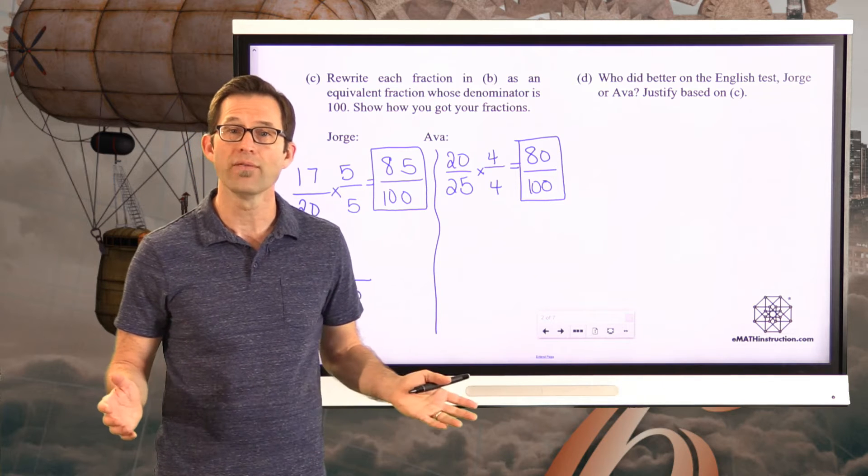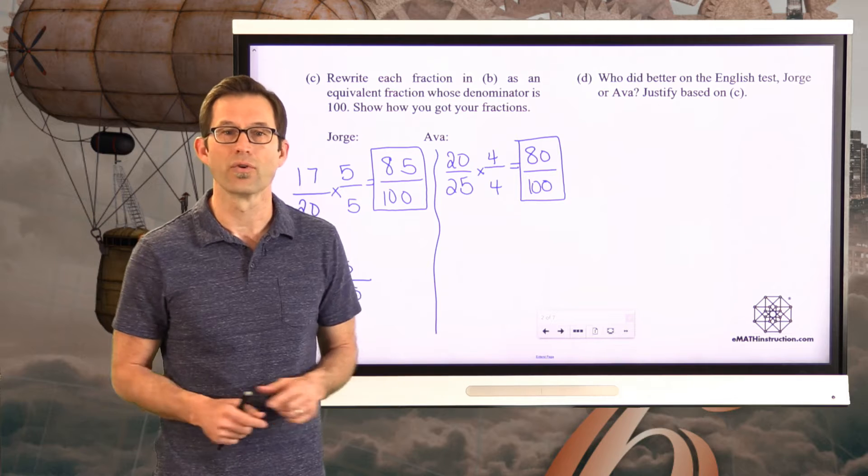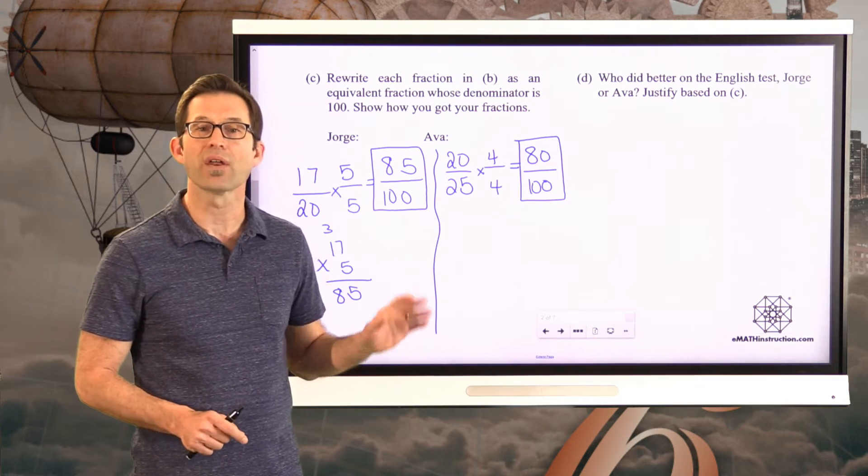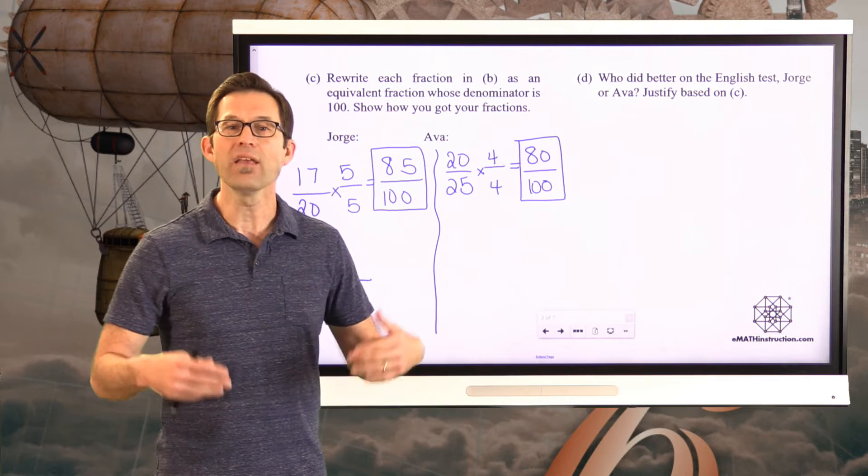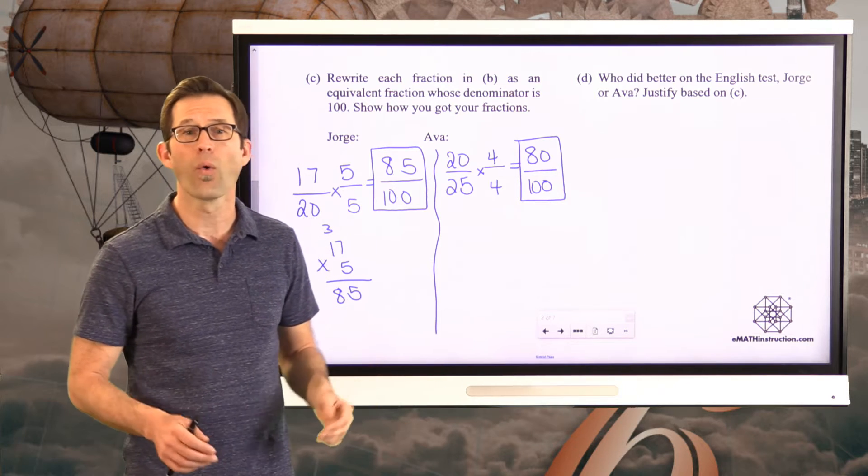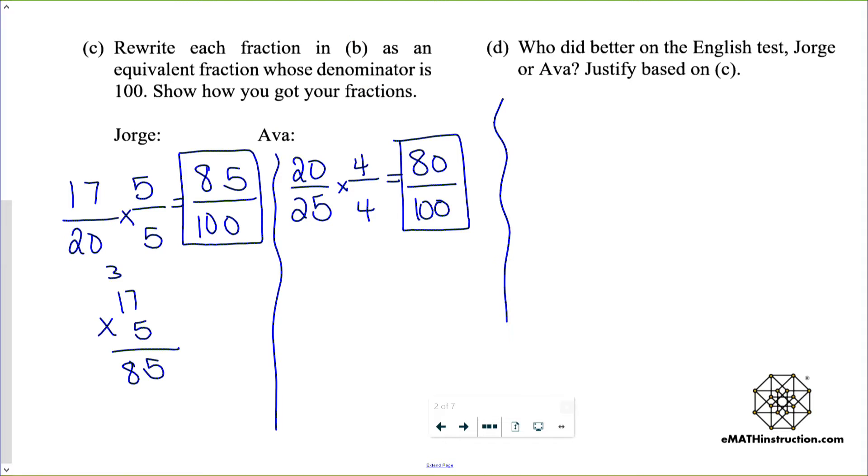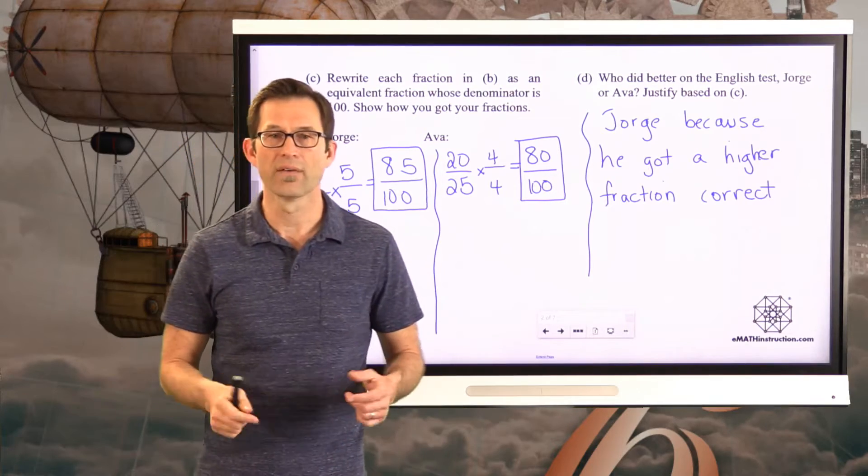So letter D, who did better on the English test, Jorge or Ava? Justify based on C. Well, we can now say that Jorge did better. Now, why did he do better? Neither one of them took a test out of 100 points. But it's very easy to now see that Jorge got a larger fraction of the questions right. He got 85/100 correct, whereas Ava got 80/100 correct. It's like Jorge got 85 per 100 and Ava got 80 per 100 points. So Jorge did better because he got a higher or greater or larger fraction correct.